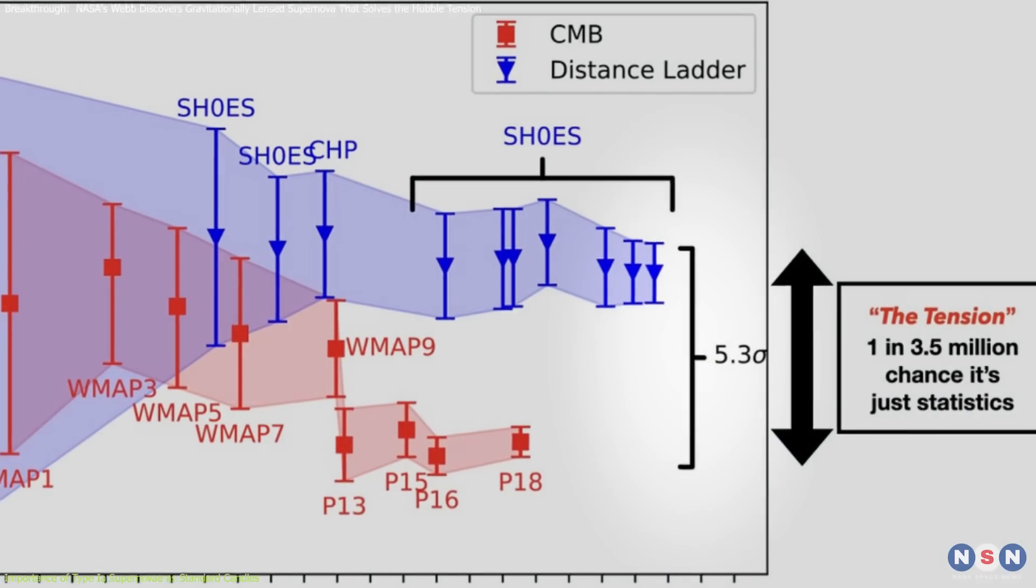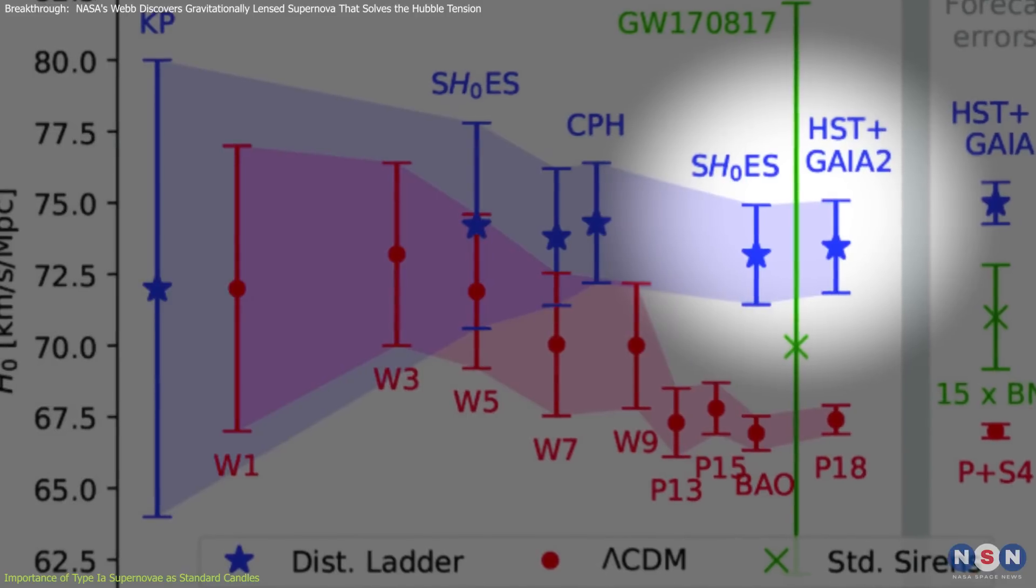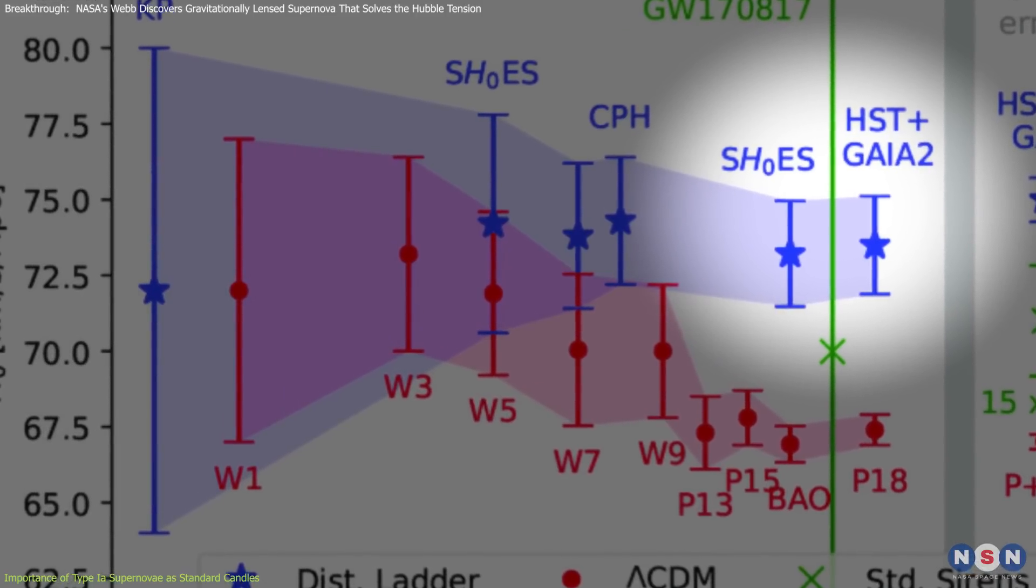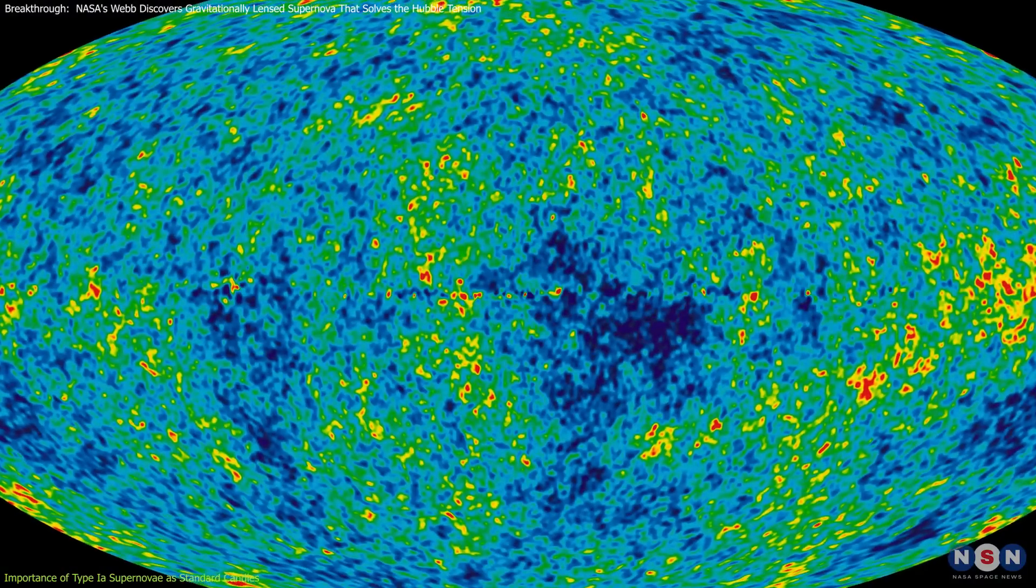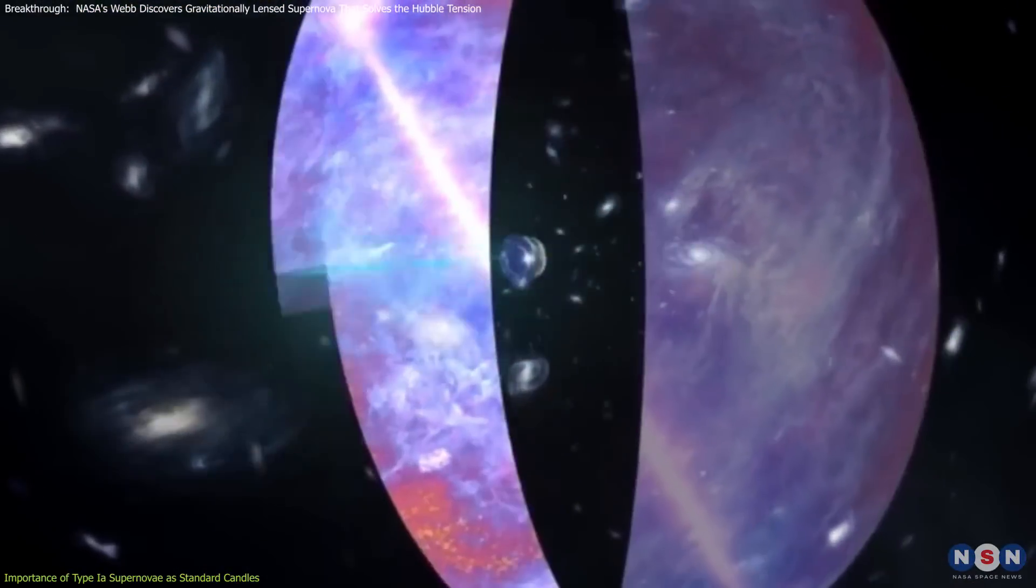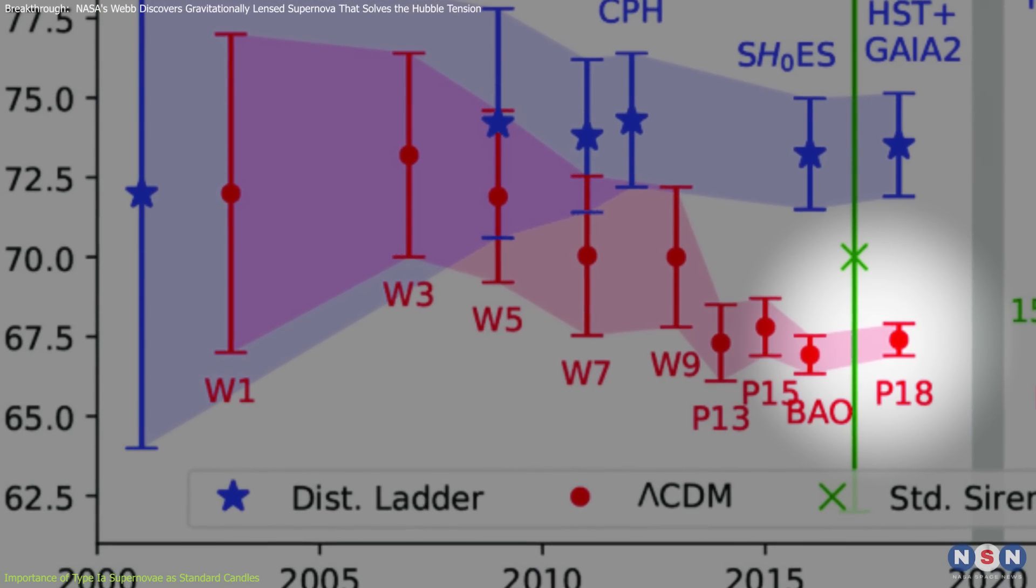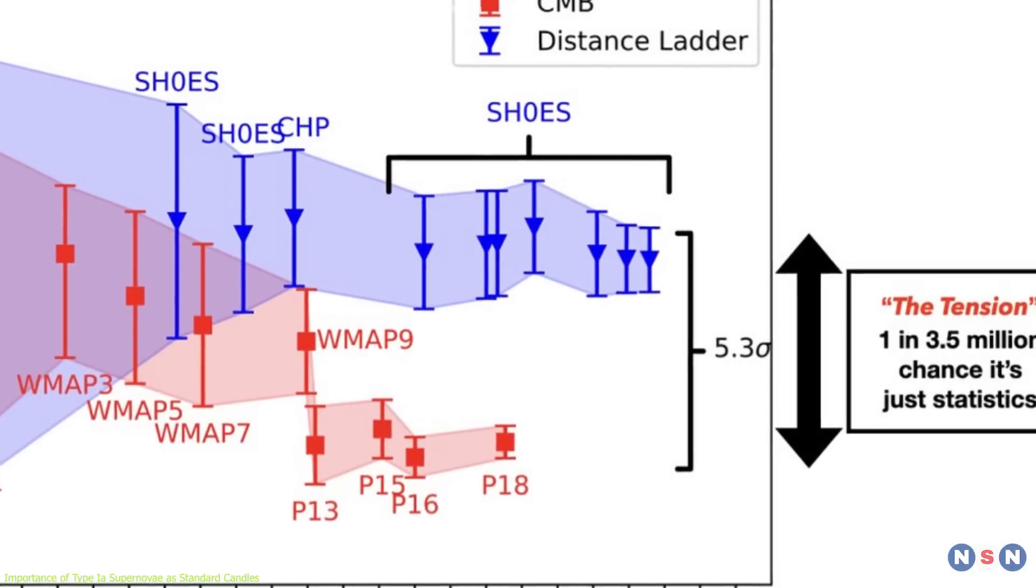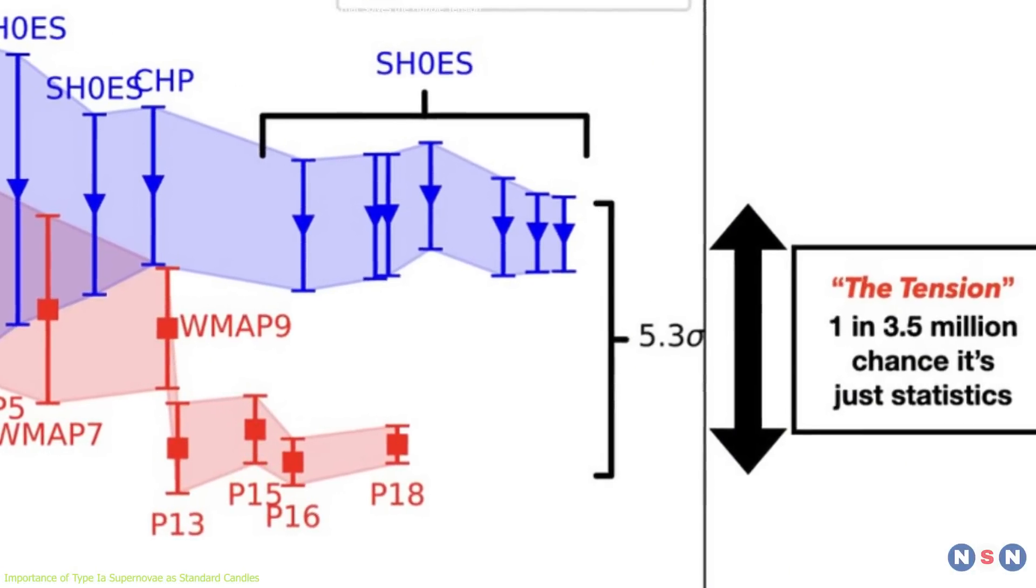This brings us to the Hubble tension, which is a discrepancy between different measurements of the Hubble constant. Local measurements, including those using Cepheids and supernovae, tend to give a value of around 73 kilometers per second per megaparsec. However, observations of the early universe, such as those from the cosmic microwave background CMB measured by the Planck satellite, suggest a lower value of about 67 kilometers per second per megaparsec. This gap between local and early universe measurements has been one of cosmology's biggest challenges.